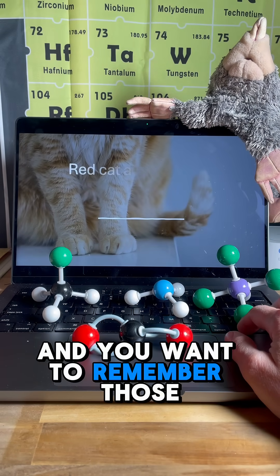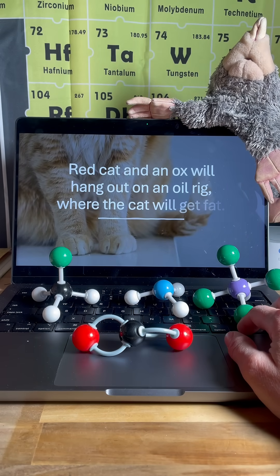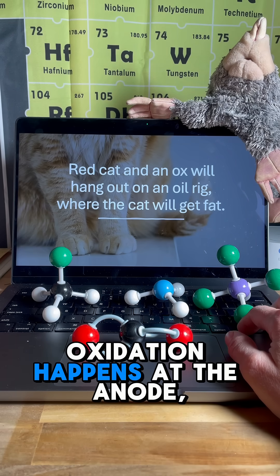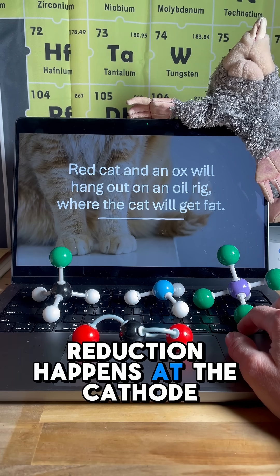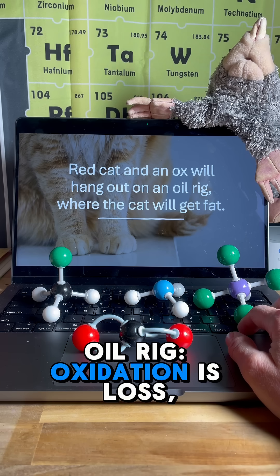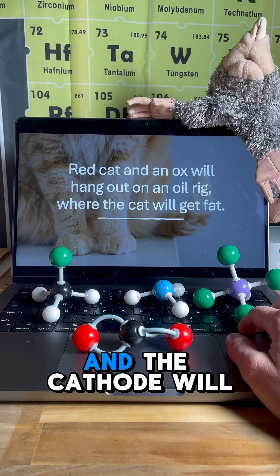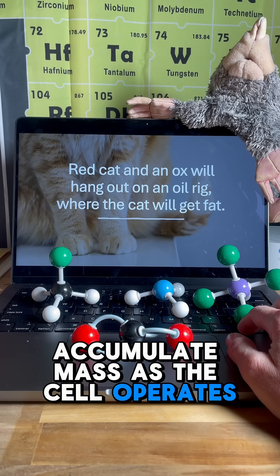And you want to remember those mnemonics for electrochem. Red cat and an ox, oxidation happens at the anode, reduction happens at the cathode, oil rig, oxidation is lost, reduction is gain. And the cathode will accumulate mass as the cell operates.